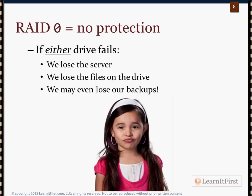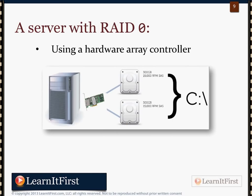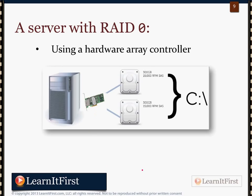The only reason you do RAID 0 is for maximum IOPS. From a hardware perspective, we have a RAID controller on the board, two hard drives plugged into it, and the array controller makes these look like one drive to the operating system — it just sees it as the C drive.